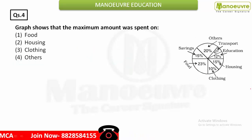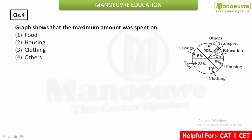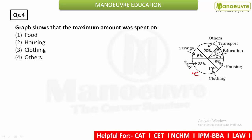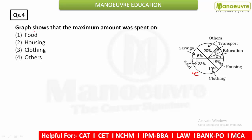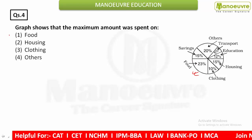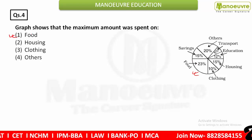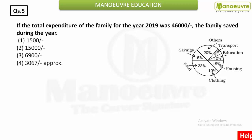The next question asks which item had the maximum amount spent. From the graph, it is clearly visible that 23% is the maximum, spent on food. So you can directly write option 1 as your answer.